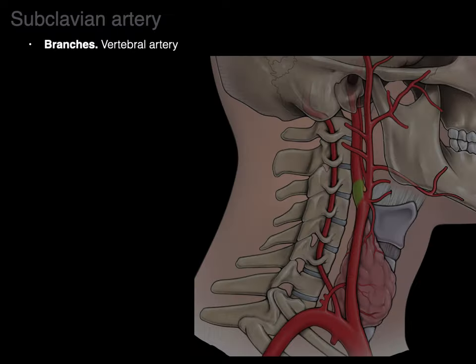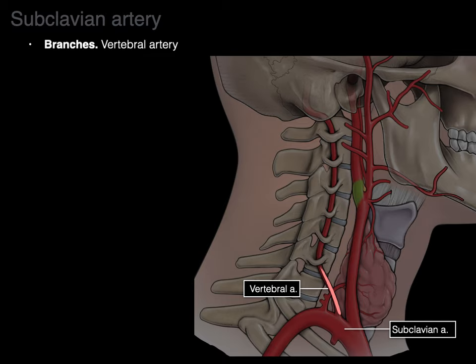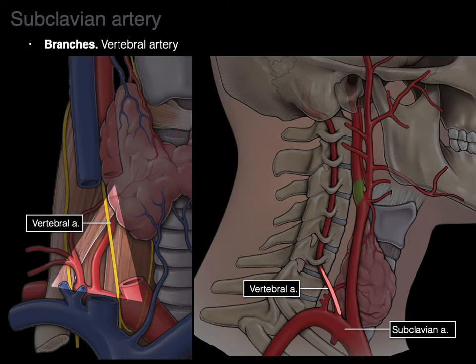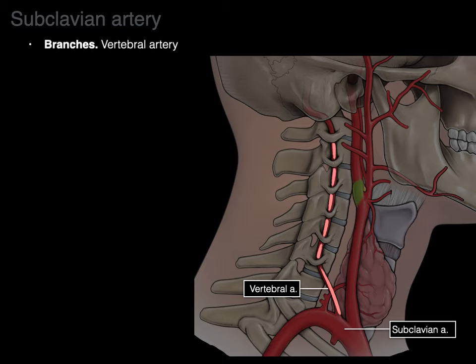The subclavian artery branches are as follows. The first is the vertebral artery — a very important one. In this lateral view, you can see the subclavian artery and the vertebral artery ascending, getting close and going up into the transverse foramina of the cervical vertebrae. The vertebral artery comes right off the subclavian and hits the apex of the triangle between the anterior scalene and longus colli muscles — that's the vertebral triangle.